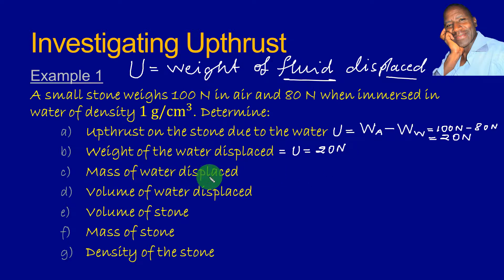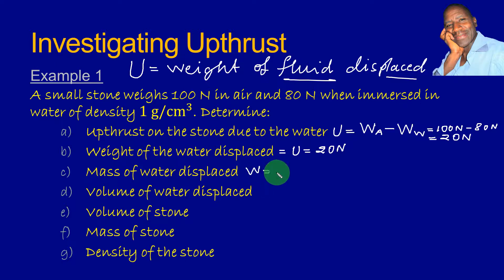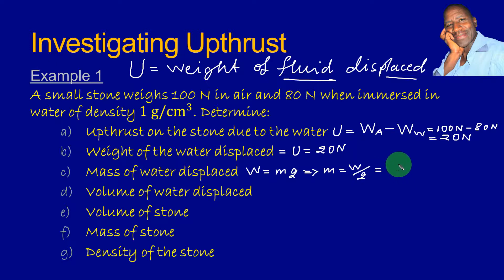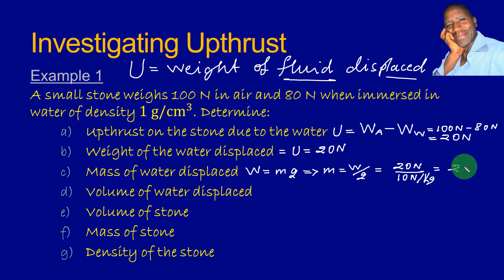From there, we can determine the mass of water displaced. We need to remember the relationship between mass and weight. Since weight of an object is equal to its mass times the gravitational field strength, it implies that mass is equal to weight divided by gravitational field strength. The weight is 20 N and g on Earth is 10 N per kilogram, giving us 2 kilograms — the mass of the water displaced.